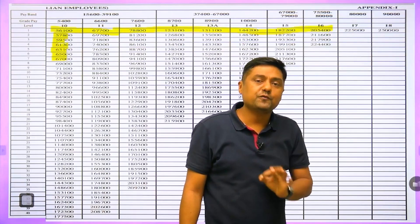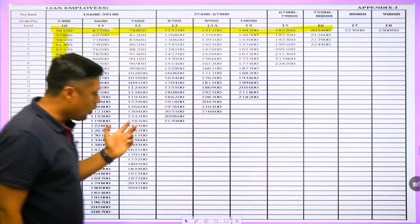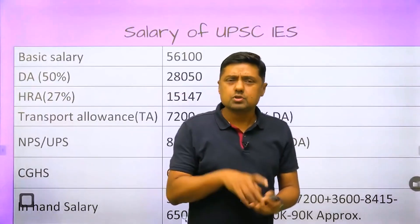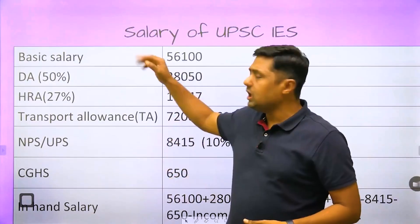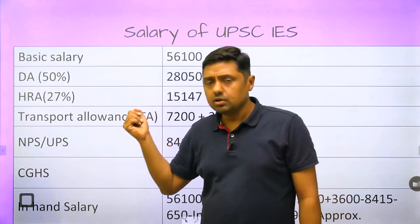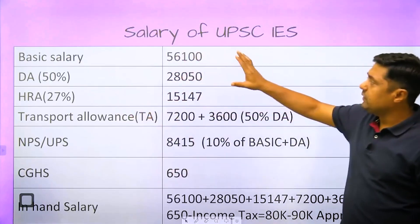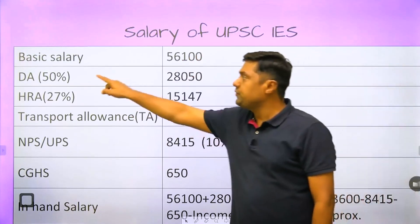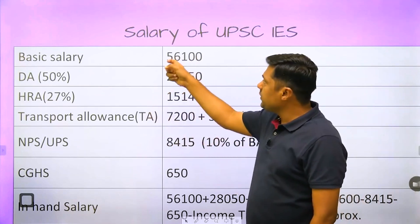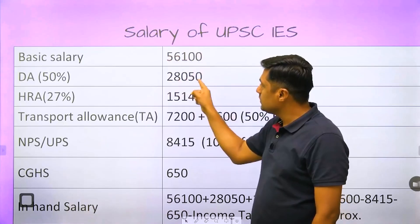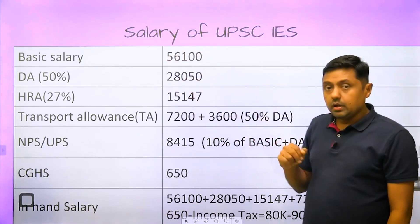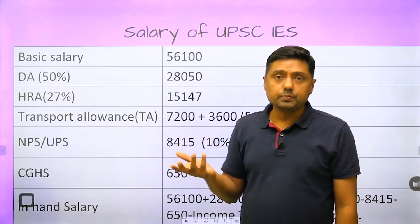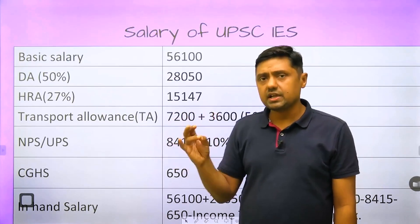From Level 13, with further promotions you will reach the apex level, where the basic salary is ₹2,50,000. Now we will calculate the in-hand salary. This formula applies for Class B, Class A, or any level — Level 6, 10, 11, or 12. First, get the basic salary: at Level 10 in the first year it is ₹56,100. Currently DA is around 50%, so 50% of ₹56,100. For HRA, it depends on your city — metro cities get around 27%, Tier-2 cities 18%, and others 9% — these are X, Y, and Z categories.